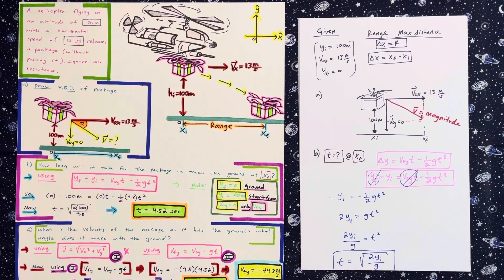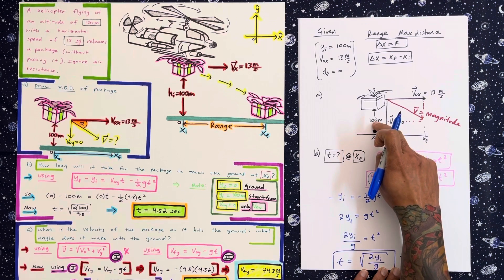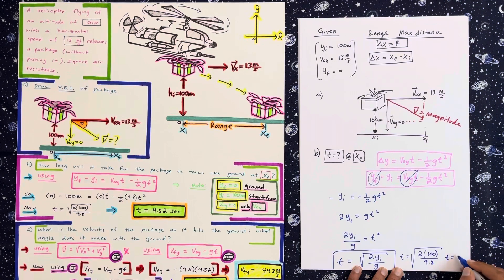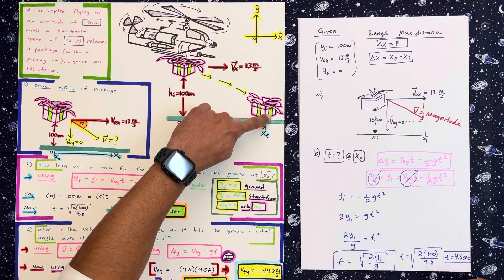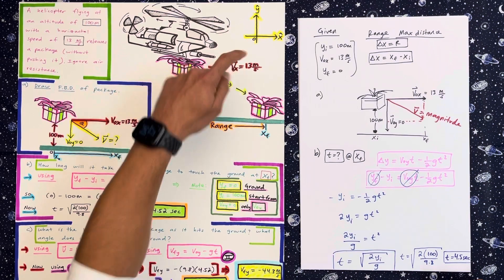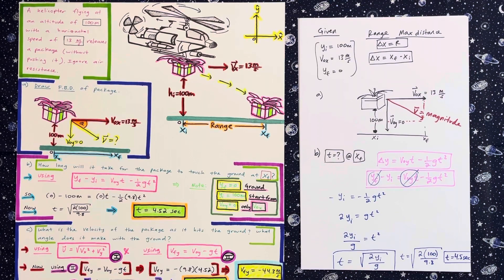Now let's plug in the values. T equals the square root of 2 times 100 divided by 9.8. Putting that in the calculator, we get time equals 4.52 seconds. That's how long it takes for the package to hit the ground when released from a height of 100 meters at a horizontal velocity of 13 meters per second.